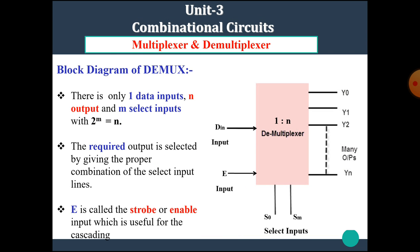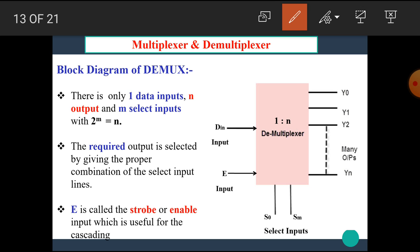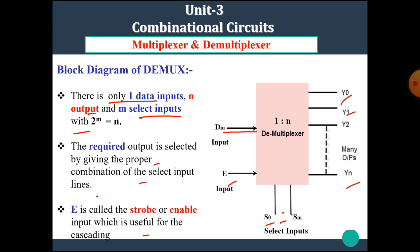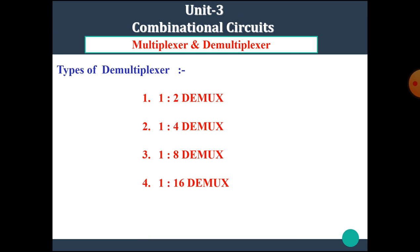Now let's see the block diagram of the demultiplexer, in which we can see that there is only one data input, n number of outputs — Y0, Y1, up to Yn — and m select inputs S0 up to Sm. The required output is selected by giving the proper combination of the select input lines. E is called the strobe or enable input, which is useful for cascading.